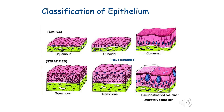For simple epithelia, the shape can be flat or squamous, square-like called cuboidal, or taller than wide which we call columnar. If it is stratified, you only use the topmost layer and the shape of that topmost layer to describe that kind of epithelium. So if there is a stratification where the topmost layer is squamous or flat, you say it is stratified squamous. If the topmost layer is cuboidal, you say it is stratified cuboidal, and so on.